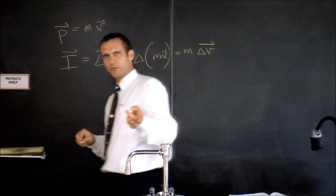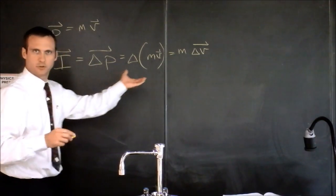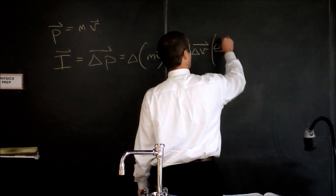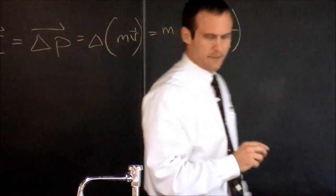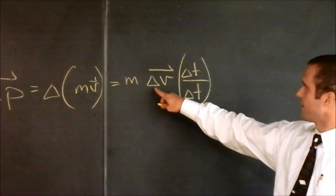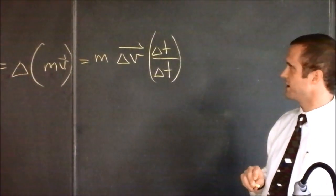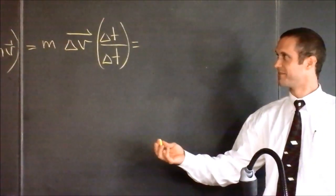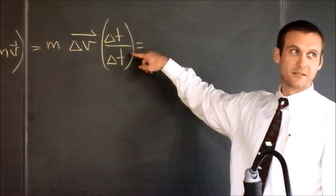Now what I'm about to do is multiply by one. Would you agree that I could take the impulse and multiply it by one? I'll write one like this: delta t over delta t. I've got m times delta v times delta t over delta t. The delta t's cancel, and it just becomes m times delta v — but rearranged, we'll write it differently.